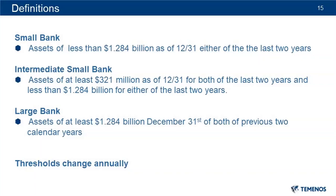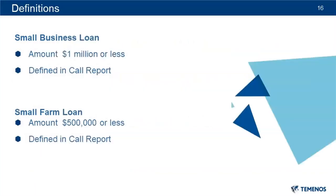A small business loan is one that is $1 million or less and meets the definition of loans to small businesses on your institution's call report. Small farm loans are loans that are $500,000 or less and meet the definition of loans to small farms in the call report. Now that we have briefly reviewed a few definitions, can you discuss assessment areas with us? An assessment area consists of the area where the majority of your business is conducted. It includes loans originated and purchased as well as your deposit-taking branches and deposit-taking ATMs.